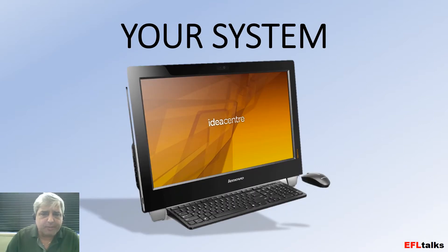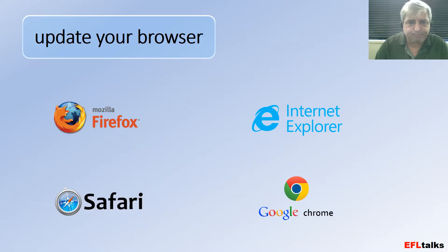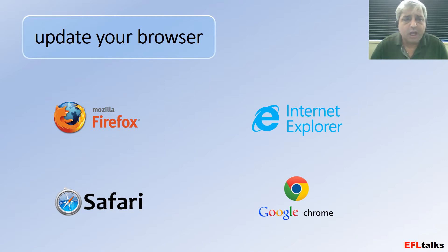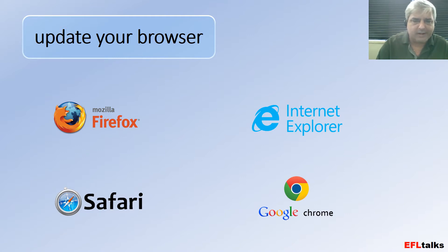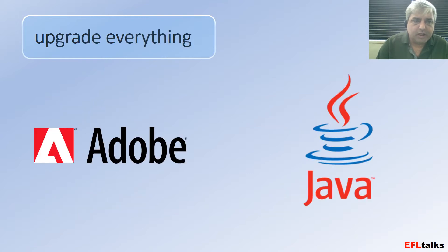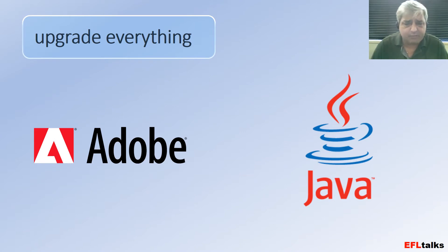So what we're going to talk about is your system today. First thing to do, no matter what you're using for a computer, update your browser — whether it be Firefox, Internet Explorer, Safari, Google Chrome — whatever it is, make sure you have the latest update and everything is up to date for all your browsers. Next thing, with a lot of PCs and sometimes on Mac, make sure that you have the latest version of Adobe and also Java.